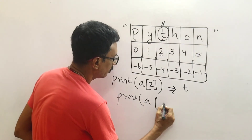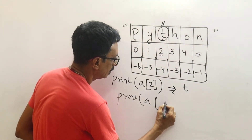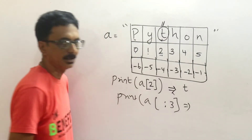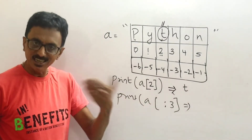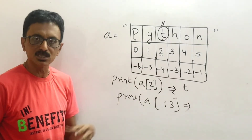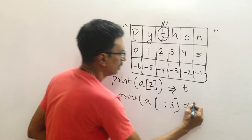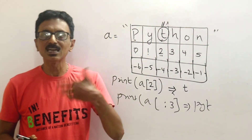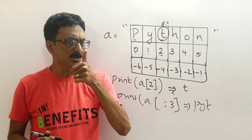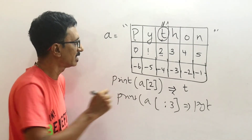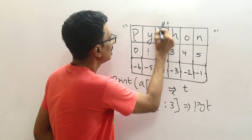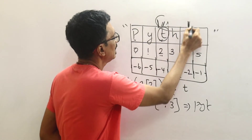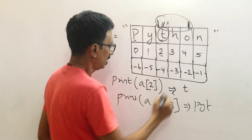Print a[3] — the default starting position is 0. So from 0 to 3 gives 'Pyt'. Here, t will be at index 0, O will be at the next position.